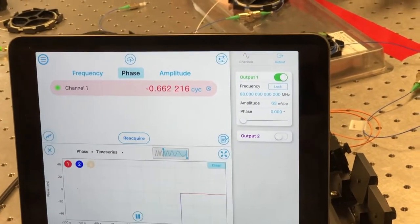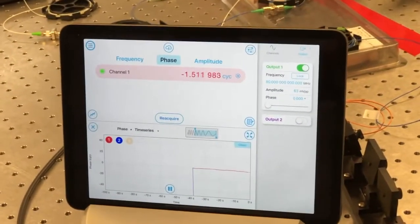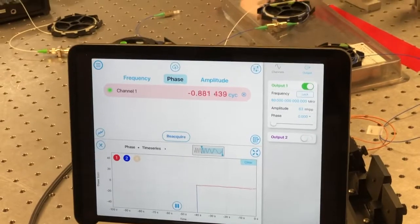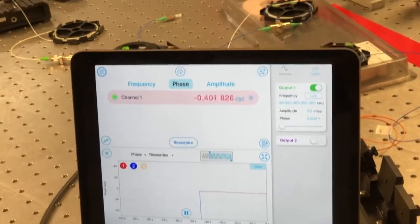And what the phase tells me in this case is how the different path lengths, the different arms in this interferometer are moving with respect to each other. And that's really handy because what it can tell you is, give you very precise measurement of displacement or motion.